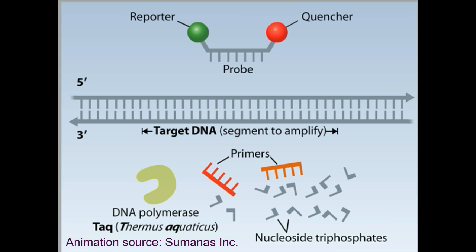When the reporter is excited by light, it transfers its energy to the nearby quencher. This process of energy transfer, called fluorescence resonance energy transfer or FRET, prevents the reporter dye from emitting that light.